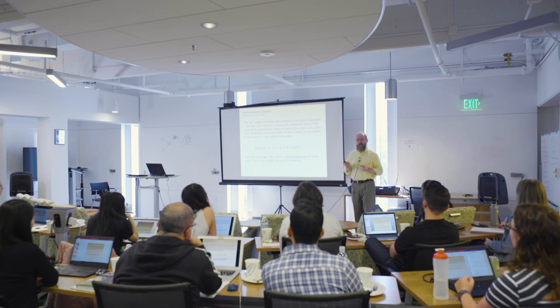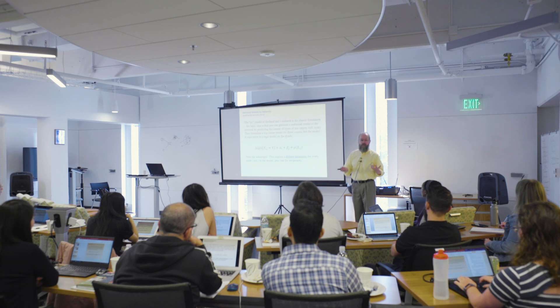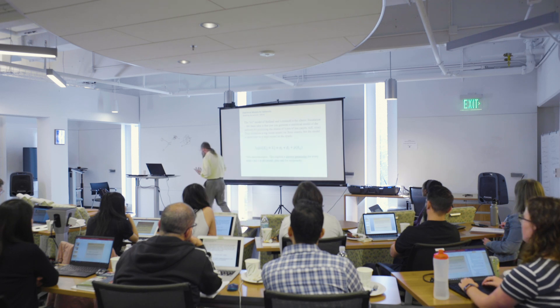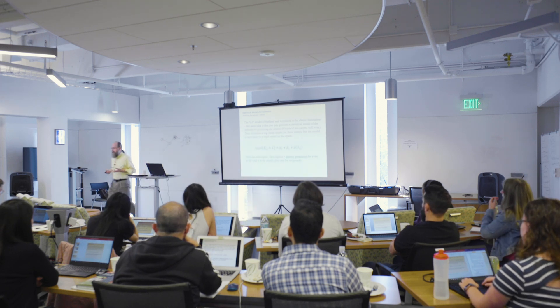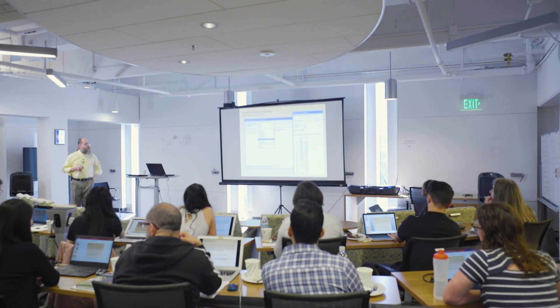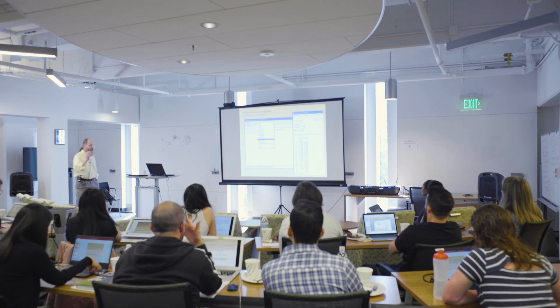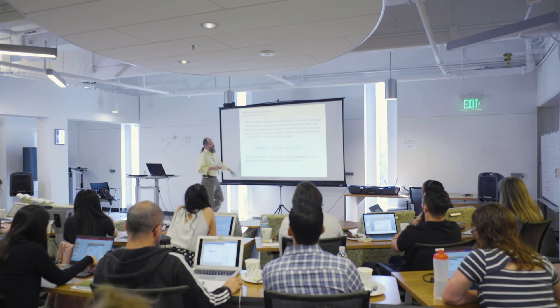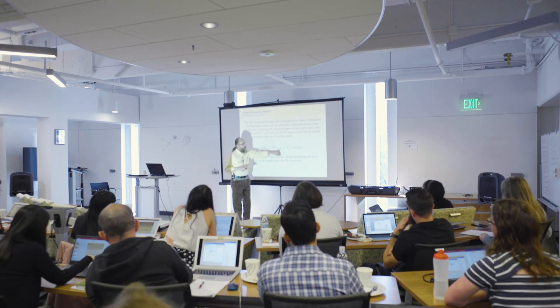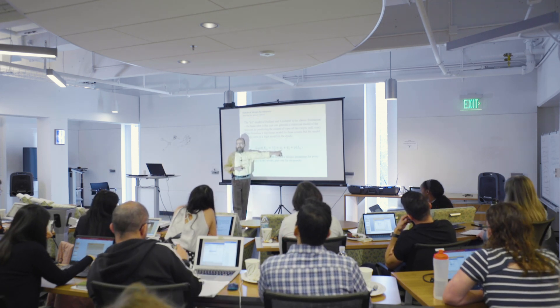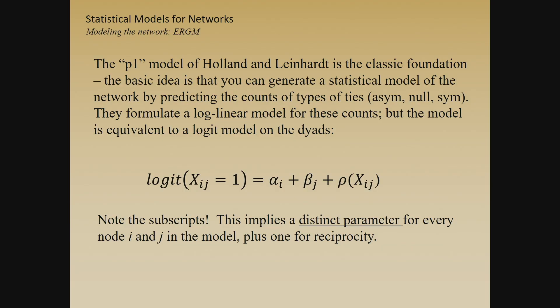For 100 nodes, you'd estimate 201 coefficients with 900 dyads — not exhausting degrees of freedom, but cumbersome. Still, there are fun things you can do. You can examine attractiveness parameters (receiver effects) and expansiveness parameters — how social a person is, like a wallflower versus a social butterfly — and a reciprocity parameter. You can compare the model's expansiveness to a person's out-degree, finding that someone who should appear socially active has low degree because their ties are driven by reciprocity.